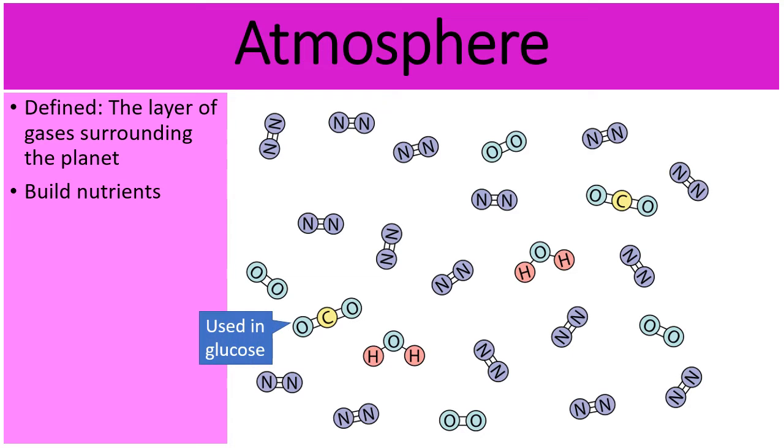Notice the carbon dioxide. Well, that carbon dioxide is used during photosynthesis to build glucose, which is an energy molecule that we all need, a nutrient. H2O, the water, is also taken in during photosynthesis and is used by plants and other autotrophs to build glucose.